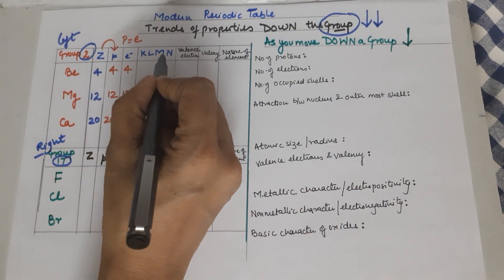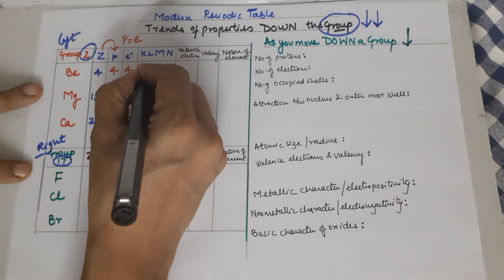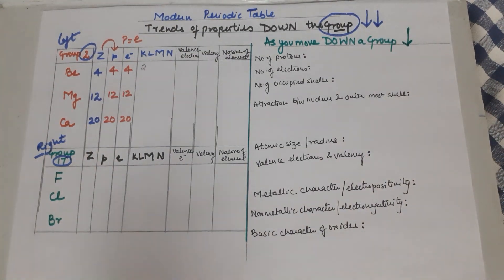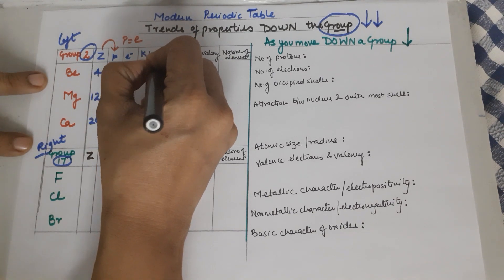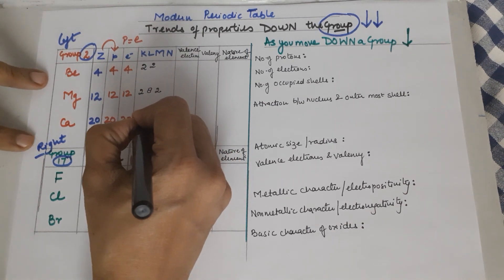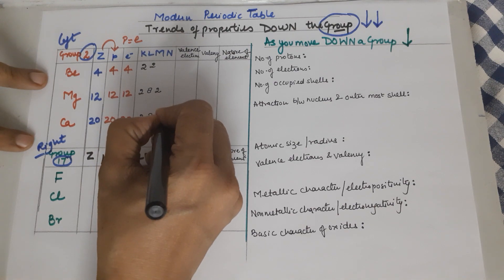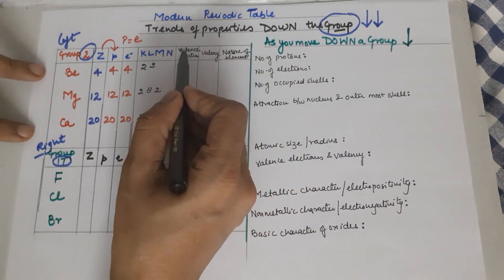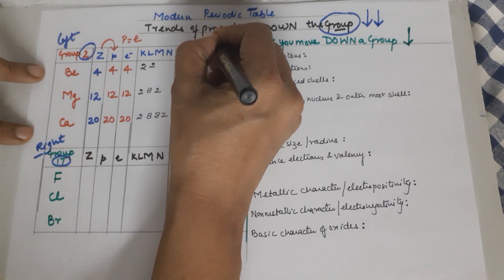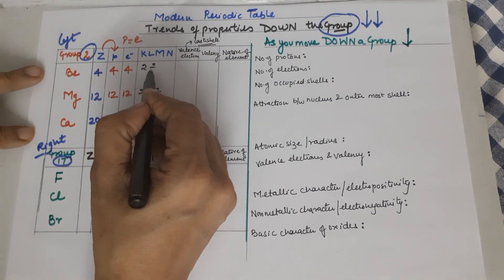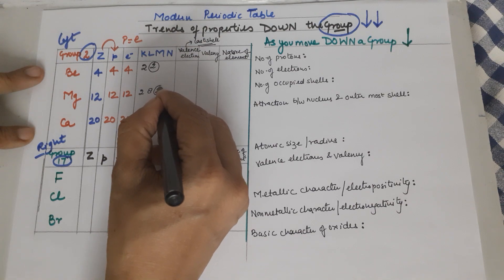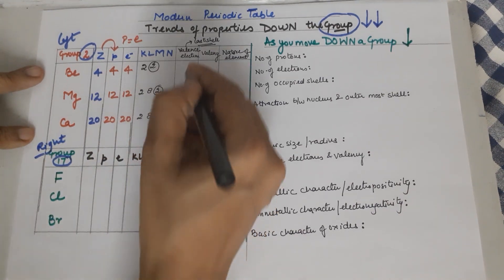Hence the electrons are 4, 12, and 20. Now coming to electronic configuration — I need to place the electrons in shells. For beryllium with 4 electrons, the EC would be 2 in the first shell and 2 in the second shell. For magnesium: 2, 8, 2. For calcium: 2, 8, 8, 2. Now let's talk about valence electrons — these are the electrons of the last shell. For beryllium, the last shell is L, giving 2 valence electrons. For magnesium, 2 valence electrons again. For calcium, also 2 valence electrons.